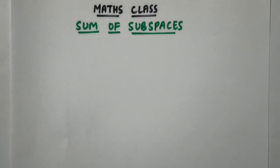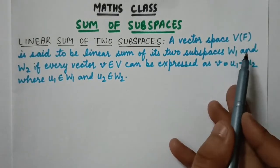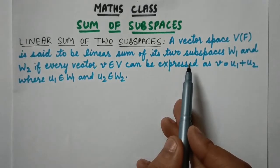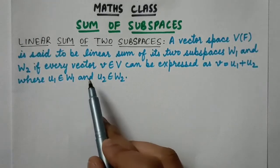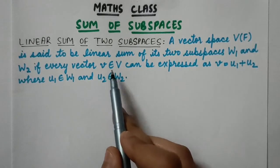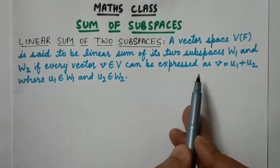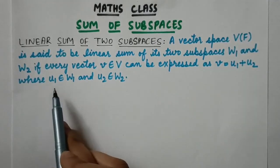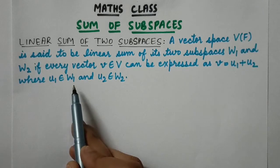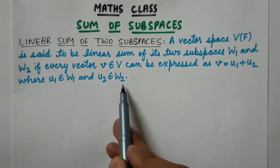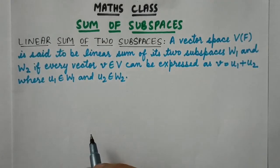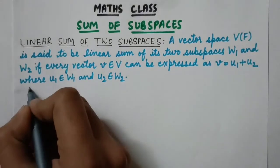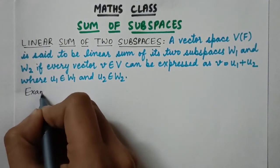First, let's look at the definition of the linear sum of two subspaces. A vector space V over the field F is said to be the linear sum of its two subspaces W1 and W2 if every vector v belonging to V can be expressed as v = u1 + u2, where u1 belongs to W1 and u2 belongs to W2.